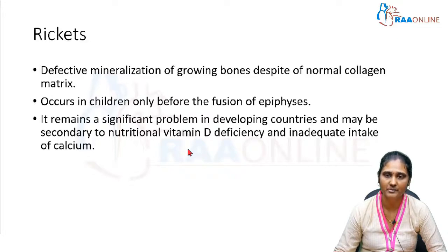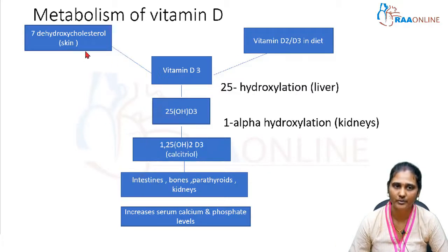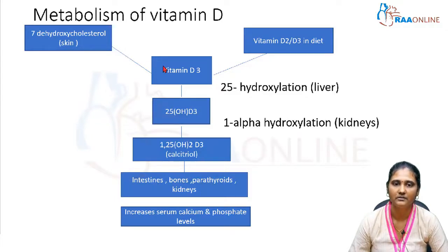Before going into the disease, we will see normal vitamin D metabolism. The metabolism of vitamin D occurs from two sources: cutaneous synthesis and diet. Cutaneous synthesis is the most important source — it depends on the conversion of 7-dehydrocholesterol present in the skin to vitamin D3 (cholecalciferol) by ultraviolet B radiation from the sun. Dietary sources rich in vitamin D include fish liver oils and egg yolk.